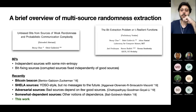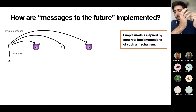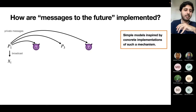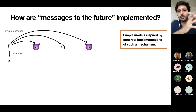Let's get back on track. I've been talking about messages to the future without discussing how this could work, since roles aren't assigned to parties at the time these messages are sent. The security model really depends on how we model these messages to the future. We consider two models inspired by concrete implementations of how this messaging would work in practice.